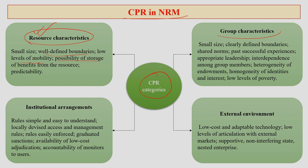Next, group characteristics: clearly defined boundaries, shared norms, past successful experience, appropriate leadership, interdependence between community members, heterogeneity of endowments, homogeneity of identities and interests, and low level of poverty. These are certain characteristics of a group that also decide the category of CPR.